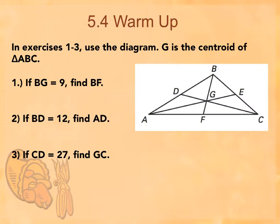Remember that there's a point of concurrency for all of them except for mid-segment. We got another vocabulary term for where they meet. So which of those types of segments have a centroid? This is the median. And with the median, we said that the point of concurrency, or where they meet — that centroid — is two-thirds the distance from the vertex and one-third the distance from the side.